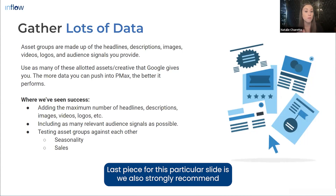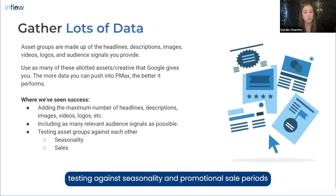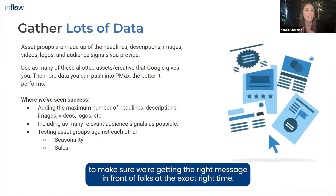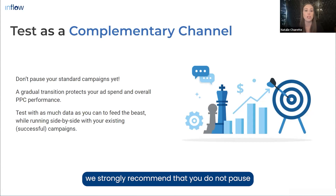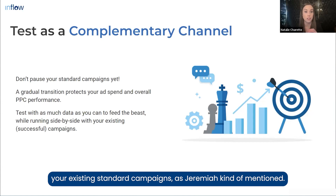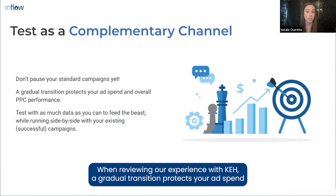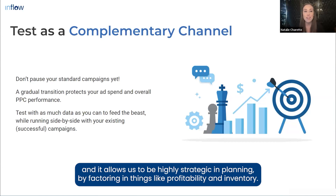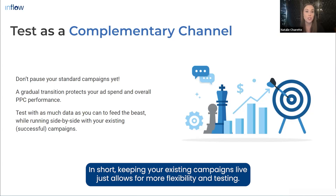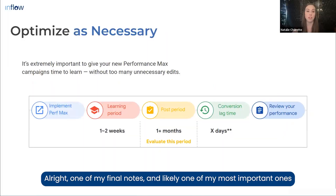We also strongly recommend testing against seasonality and promotional sale periods to make sure you're getting the right message in front of people at the right time. When implementing Performance Max for the first time, we strongly recommend that you do not pause your existing standard campaigns. A gradual transition, as we experienced with KEH, protects your ad spend and overall revenue while Google begins to gather data for new campaigns, and allows for high strategic flexibility factoring in profitability and inventory.